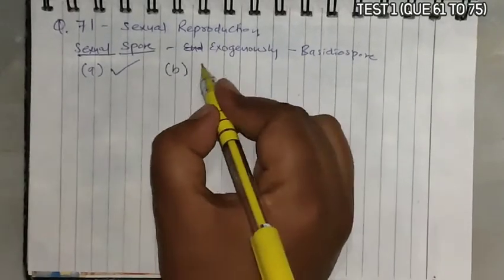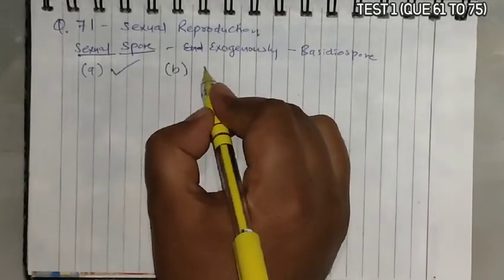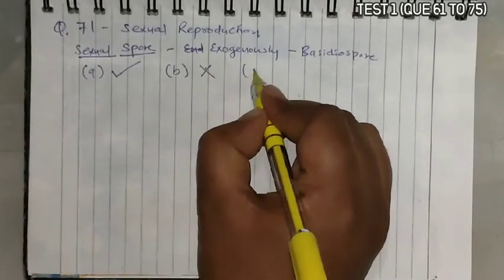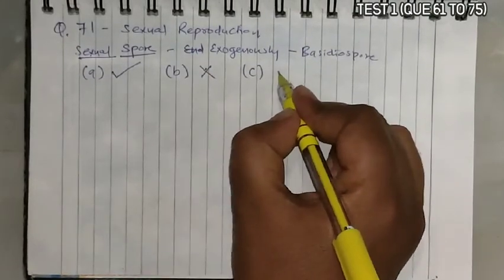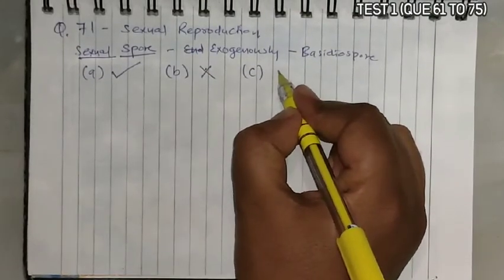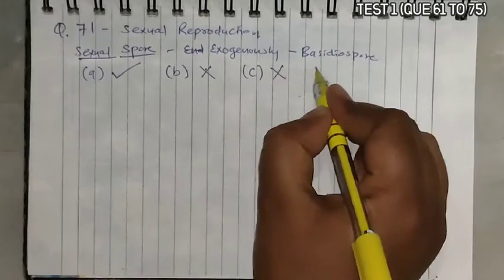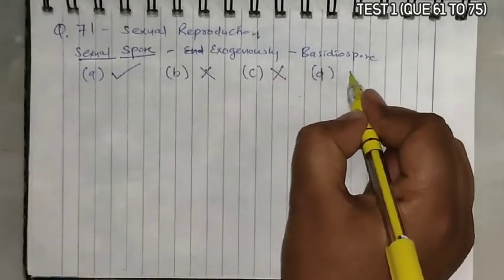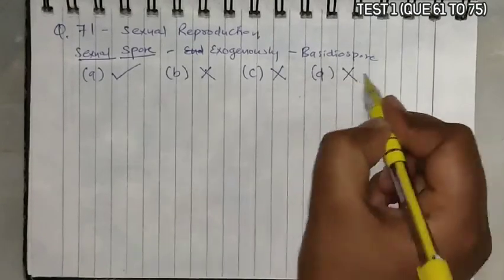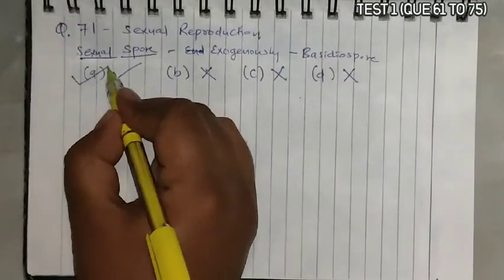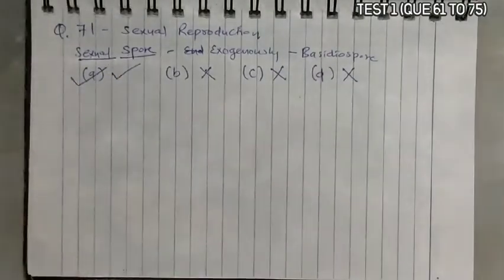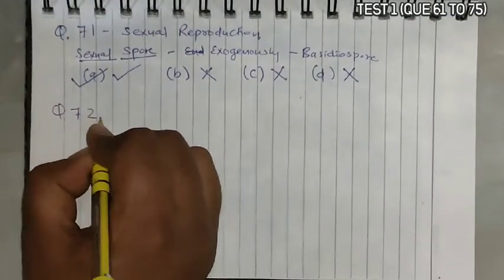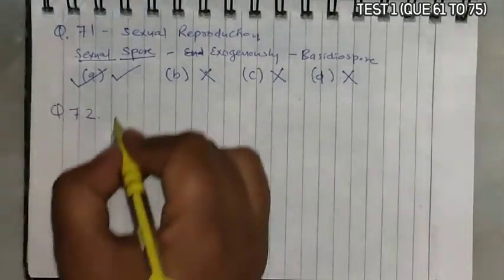Option B, Alternaria, belongs to Deuteromycetes and cannot have basidiospores. Option C, Neurospora, belongs to Ascomycetes, so it cannot be the answer. Option D, Saccharomyces, also belongs to Ascomycetes. Basidiospores are found only in Basidiomycetes, that is Agaricus.